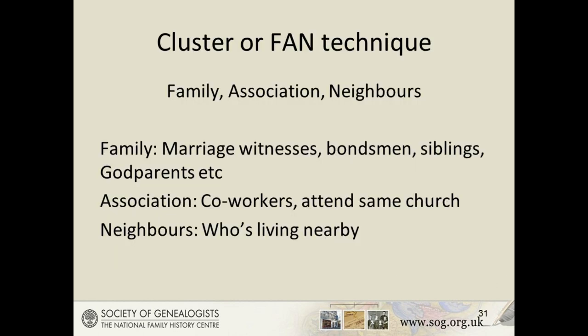Another useful genealogical technique is to look more widely at extended family members — who were your ancestors associated with and who were their neighbours? Some genealogists call this the FAN (Family, Associates, and Neighbours) technique. Family members may be witnesses at a marriage, bondsmen on a marriage bond, godparents, etc. Cousins and siblings should be identified as they will have similar ancestry. If you can't find an ancestor's birth certificate, can you find his brothers'? Association could be the people your ancestors worked with or attendees at the same church.